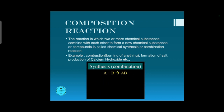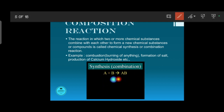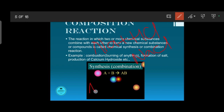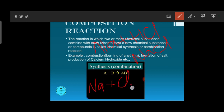One more example is the formation of salt. First, whenever metals react with acid, they form salt. Another example is whenever sodium metal reacts with chlorine gas, it forms sodium chloride.